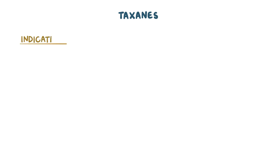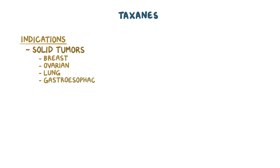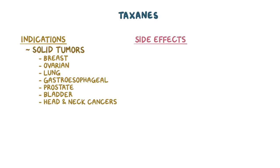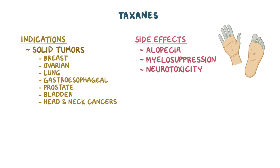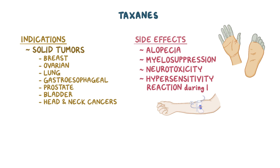For indications, taxanes are used for a variety of solid tumors including breast, ovarian, lung, gastroesophageal, prostate, bladder, and head and neck cancers. Side effects include alopecia, myelosuppression, and neurotoxicity, which again presents as a glove and stocking peripheral neuropathy. They are also associated with a possible hypersensitivity reaction during infusion.